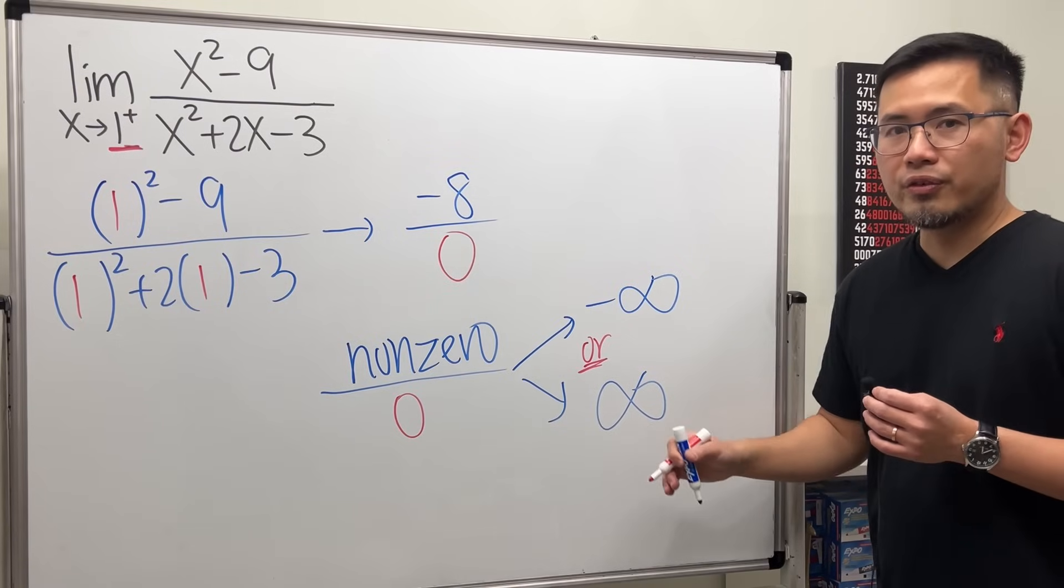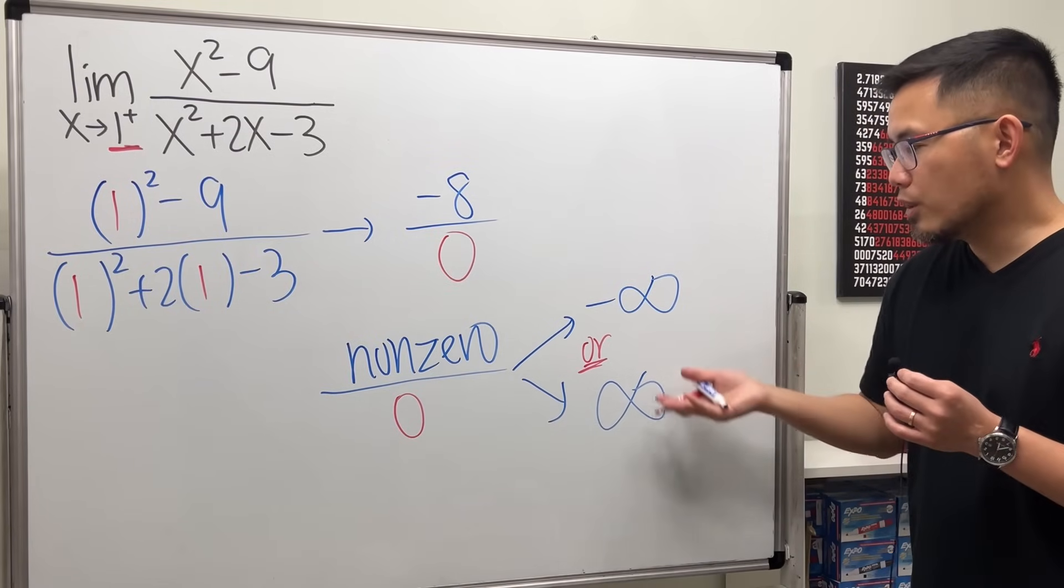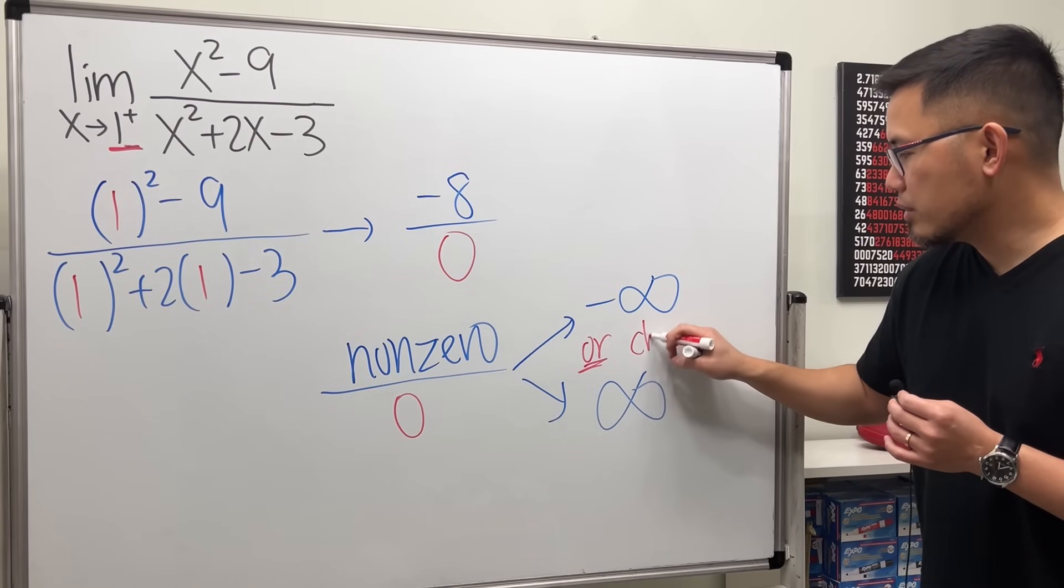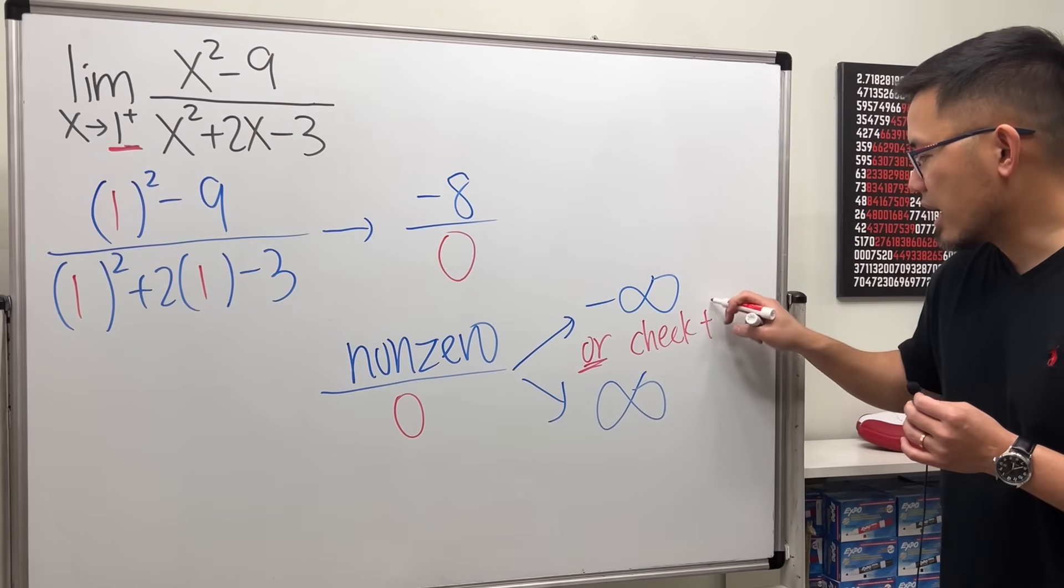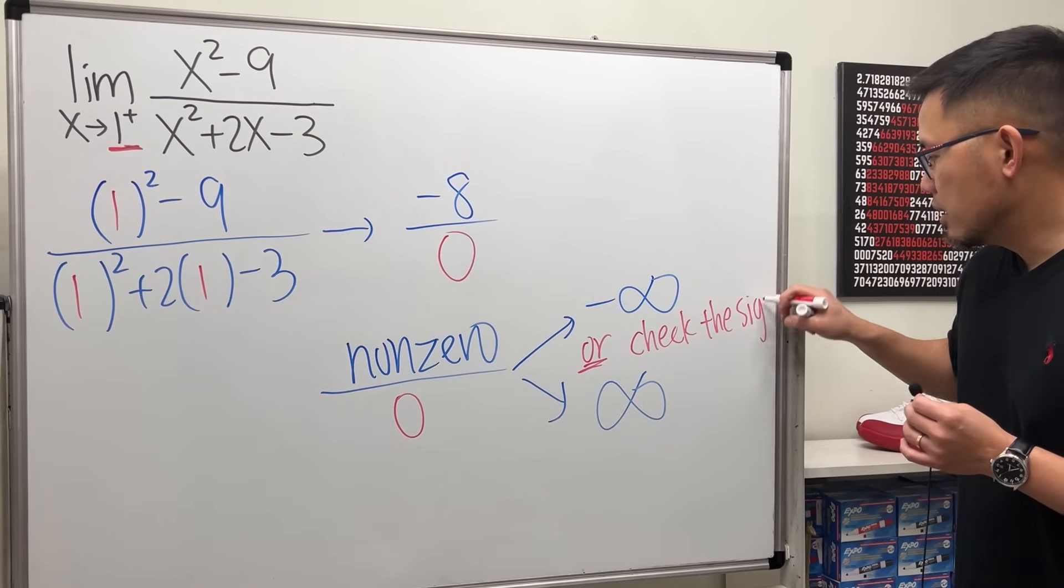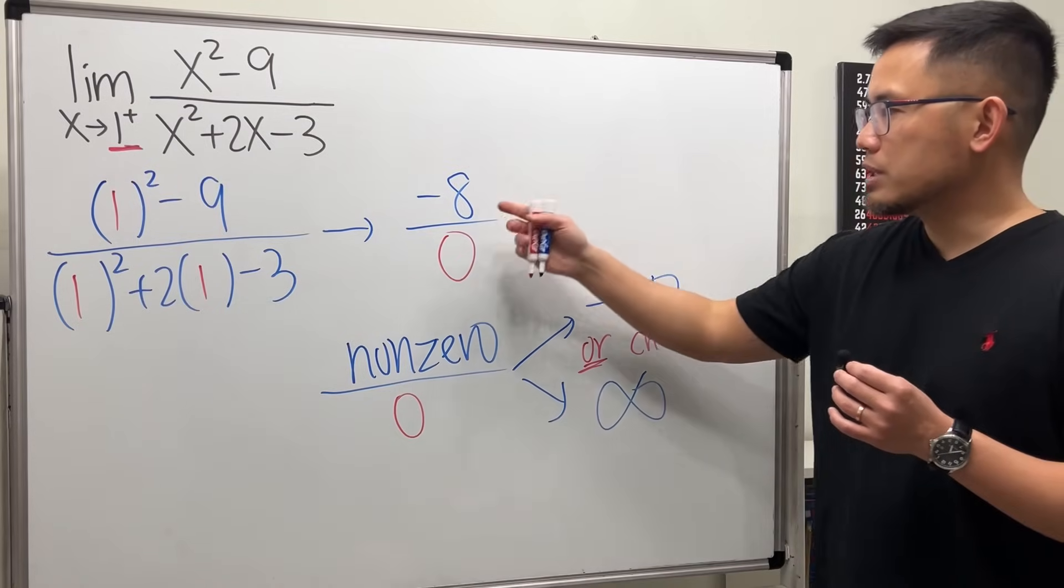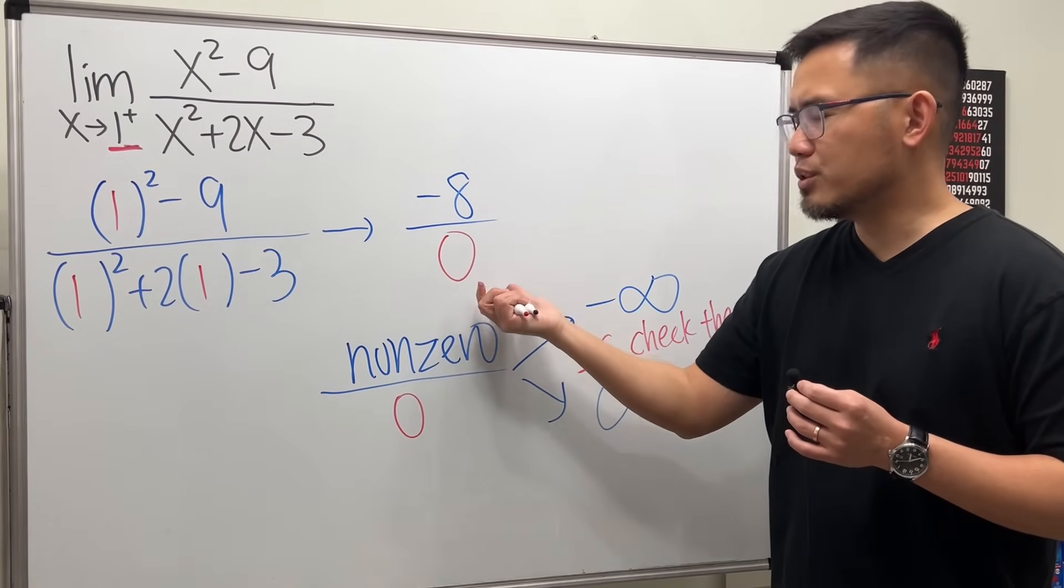One way or the other, never both, right? So how do we know which one though? The only thing that we have to do is to check the sign. On the top we see we have negative 8 already divided by 0.